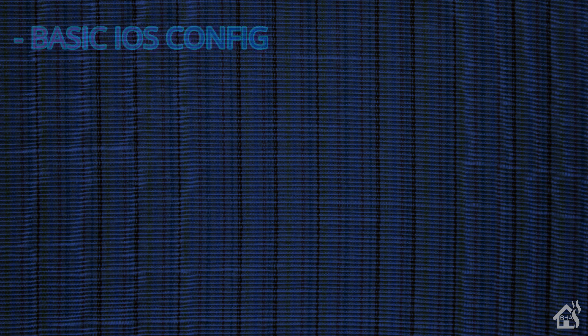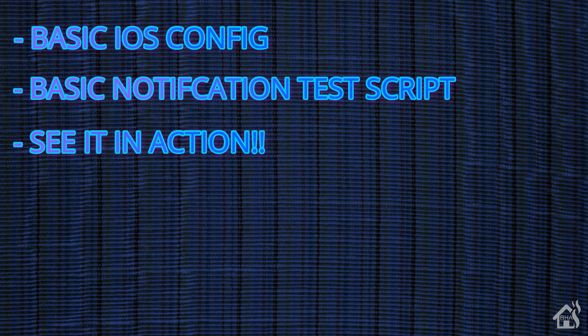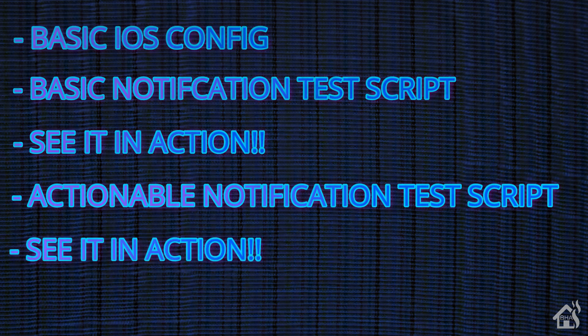Let's do a quick run-through of everything we're going to cover. First, we'll go over what we need to get iOS push notifications working with Home Assistant. Once we do that, we'll create a test script for the basic notification and see what that looks like in action. Then we'll do some actionable notification test scripts — there's a bit more involved with those, including automations, so we'll do some additional configuration.